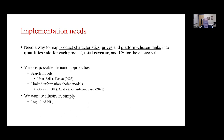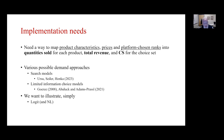What we need from a demand model is a way to map product characteristics, prices, and platform-chosen ranks into the quantity sold of each product, therefore the revenue for each product and the total revenue from the choice set, as well as the consumer surplus. There are many ways to do this — search models, limited information choice models. We'll illustrate with logit and nested logit for simplicity, but put in your favorite choice model; our idea is about how to define self-preferencing via this welfare frontier concept.